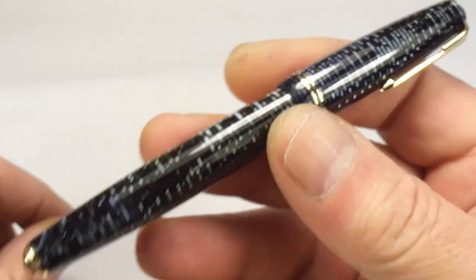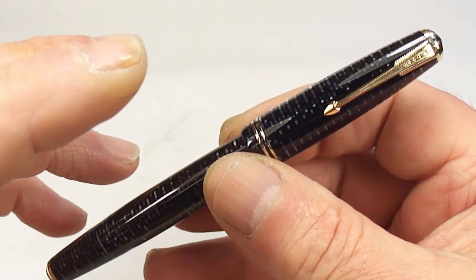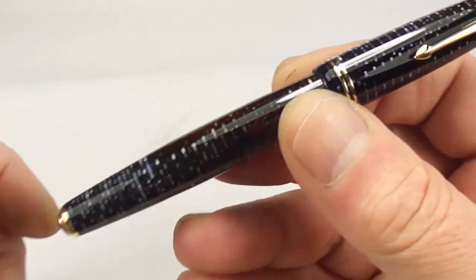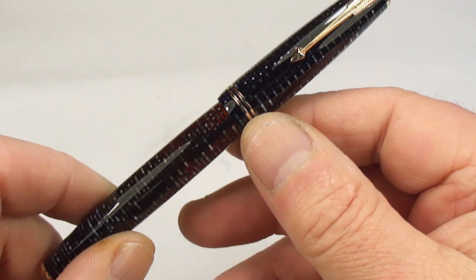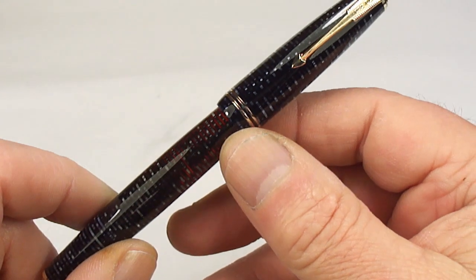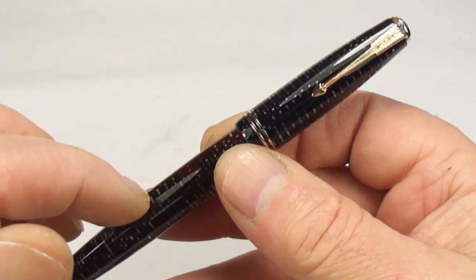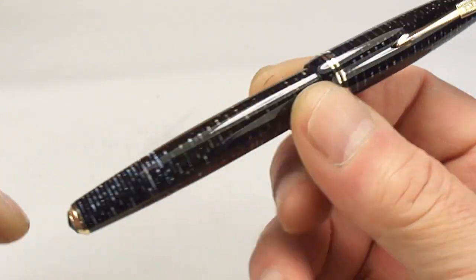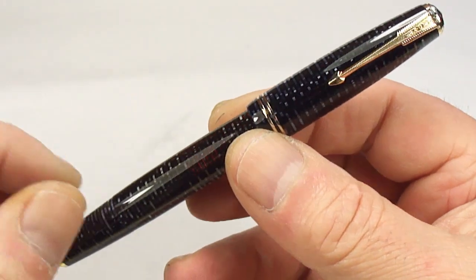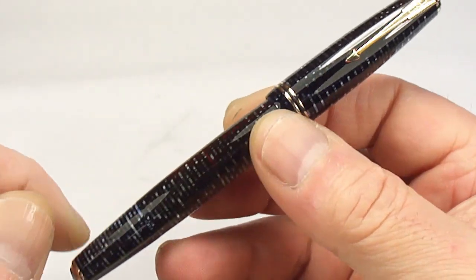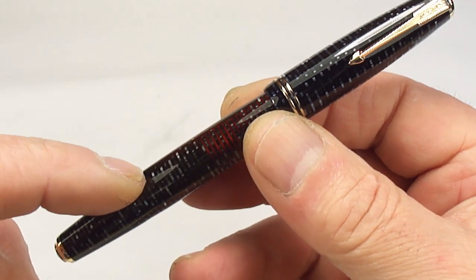The Parker Vacumatic came in lots and lots of different variations. I believe there were three generations. The first one was a lockdown filler, the second one was this speedline filler, and the third generation had a plastic button on the end.